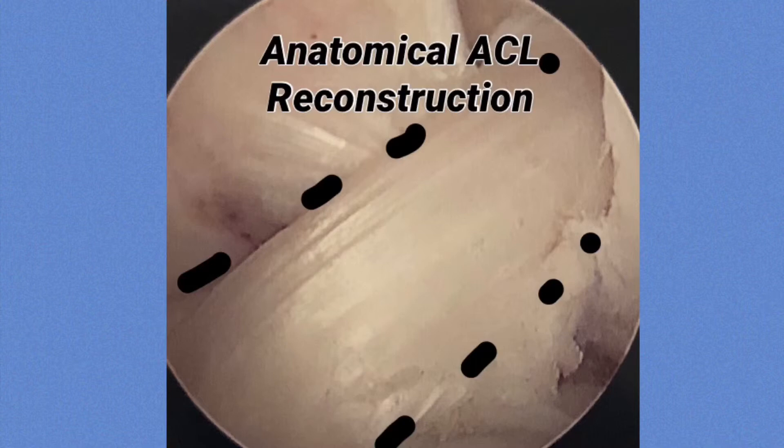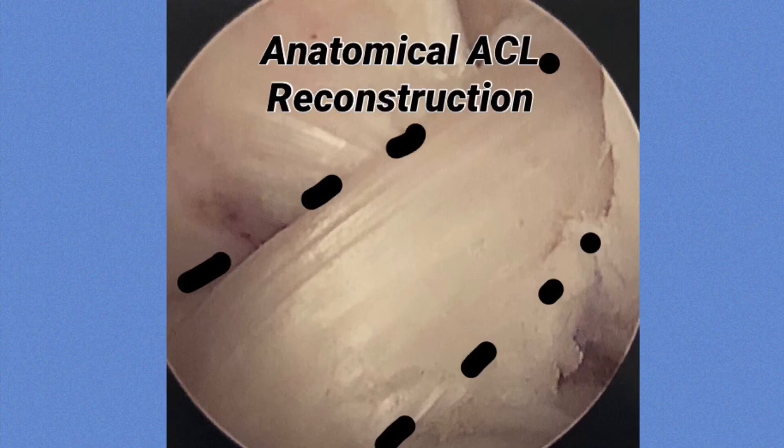Here is an example of one of my ACL reconstructions. You can see that the new ACL graft is placed in a non-vertical position to replicate both the anterior medial and the posterolateral bundles. I hope that little lesson on ACL anatomy was helpful, and if anybody is going through ACL surgery, I hope everything goes well. Thank you.